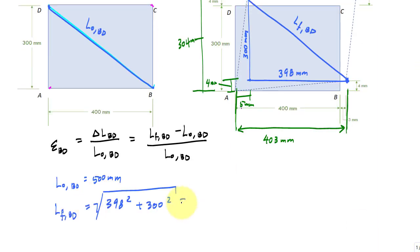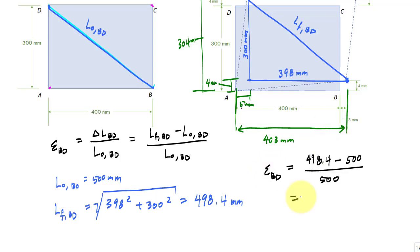Using the Pythagorean theorem, the final length of BD is 498.4 millimeters. Plugging into the strain equation gives epsilon BD equals negative 0.0032 millimeters per millimeter. The negative indicates contraction or shortening, which is associated with a compressive normal stress.